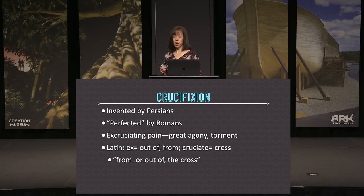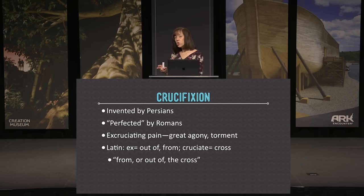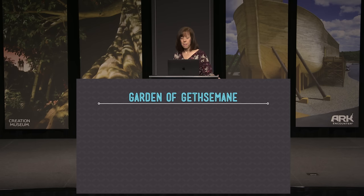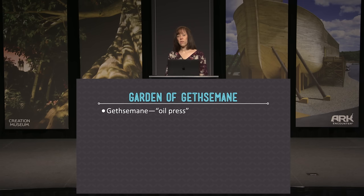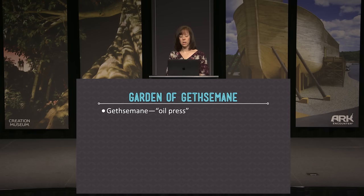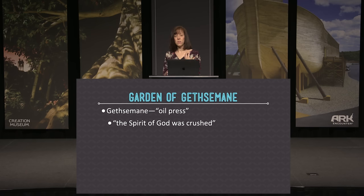Let's talk about the events leading to the crucifixion because they're relevant to Jesus's suffering. We start in the Garden of Gethsemane. Gethsemane means 'oil press,' and oil is often used to symbolize the Spirit of the Lord. In 1 Samuel 16:13 it says Samuel anointed David and from that day the Spirit of the Lord came upon him in power. So we could say there at Gethsemane that the Spirit of God was crushed as Jesus prays in earnest.